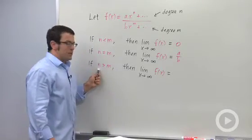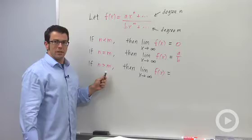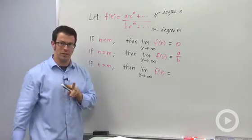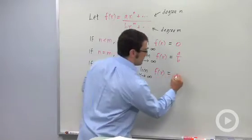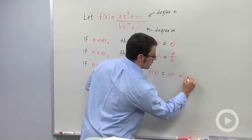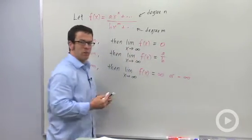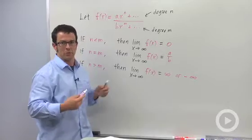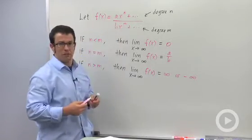Now if the degree of the numerator is bigger than the degree of the denominator, then one of two things can happen. It's either going to go to infinity or negative infinity, and you have to decide which it goes to based on the algebraic structure of the function itself.